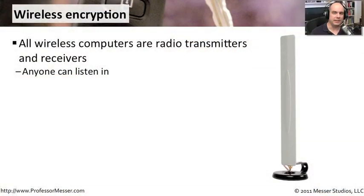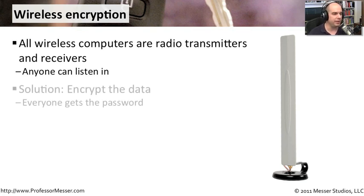Encryption over wireless technology becomes really important because wireless technology is radio waves. It makes it very easy for anybody to listen in on the right frequency and really see what's going on on your network.